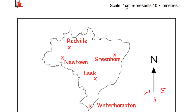One centimeter represents 10 kilometers, so 30 kilometers would be three centimeters. Here's Greenham, and we want to go 30 kilometers west — so west is going to be this way. Get your ruler and measure three centimeters in this direction. Wherever three centimeters is, you mark it across, and that will be the location of the airport — three centimeters to the left of Greenham, or in real life 30 kilometers west of Greenham.